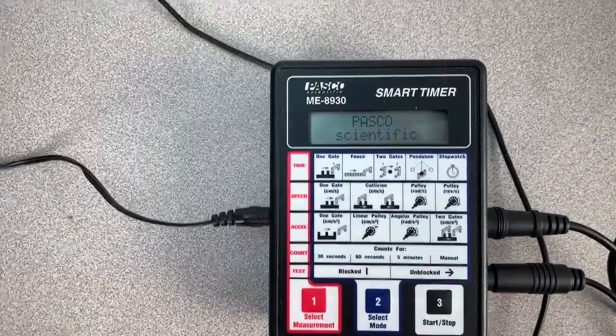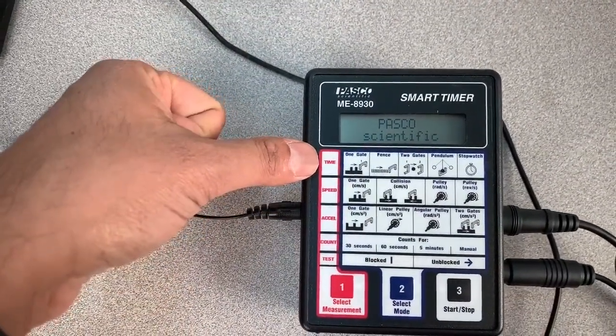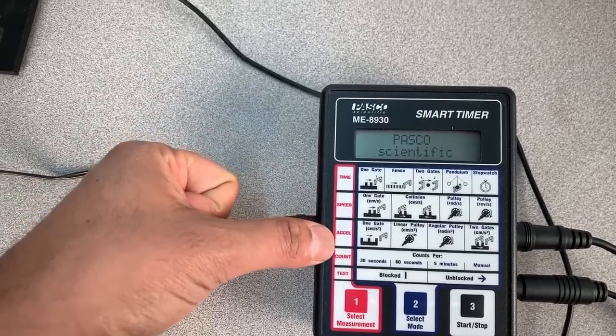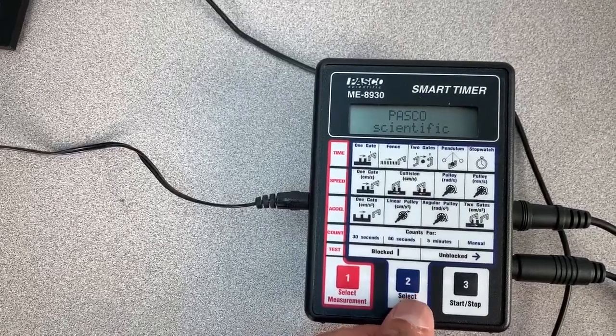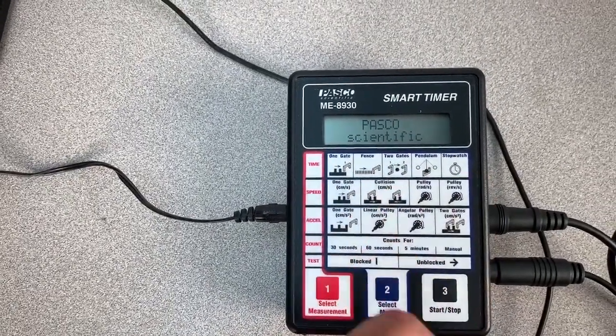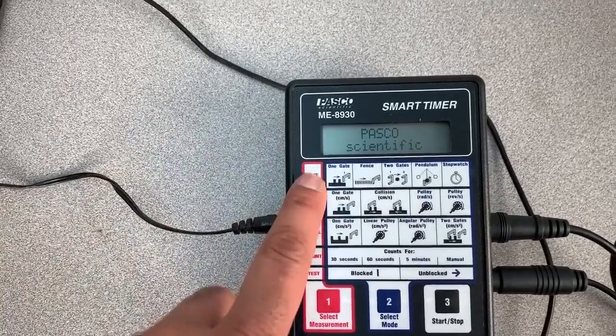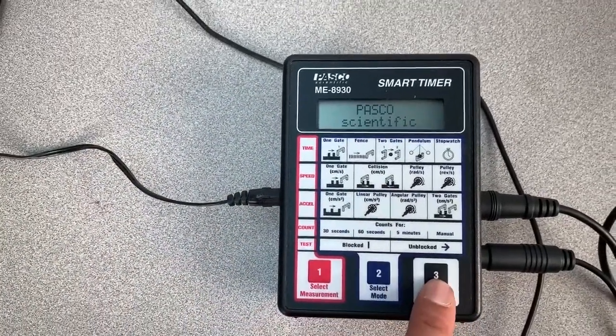We have three buttons here. The select measurement allows us to go between measuring time, speed, acceleration or counting or test mode. The mode button here allows us to jump between each one of these so we can determine how we're measuring time, how we're measuring speed, or how we're measuring acceleration, and then of course the start stop button.